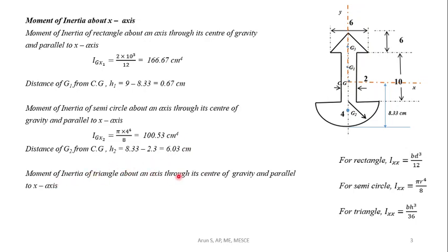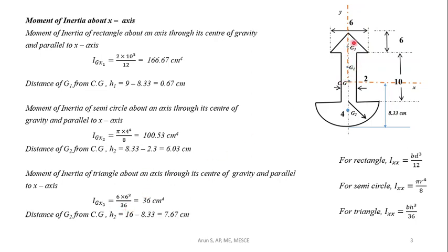For the triangle, the moment of inertia about its centroid G3 parallel to the x-axis is IGx3 = bh³/36, where base = 6 and height = 6. Substituting, IGx3 = 36 cm⁴. The distance h3 between G3 and CG: G3 is at y3 = 16 cm and CG is at 8.33 cm, so h3 = 7.67 cm.